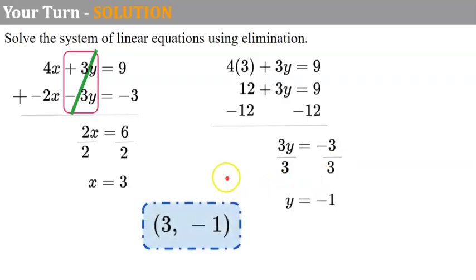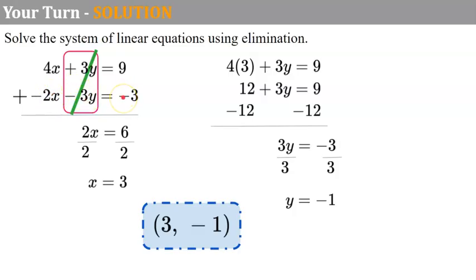Divide both sides by 3 and y is equal to negative 1. So my solution is the ordered pair (3, -1). Let's check: 4 times 3 is 12; 3 times negative 1 is negative 3; 12 plus negative 3 is 9. Now negative 2 times 3 is negative 6, then subtract positive 3 — negative 6 and positive 3 are negative 3. So my solution checks and is valid for both equations.